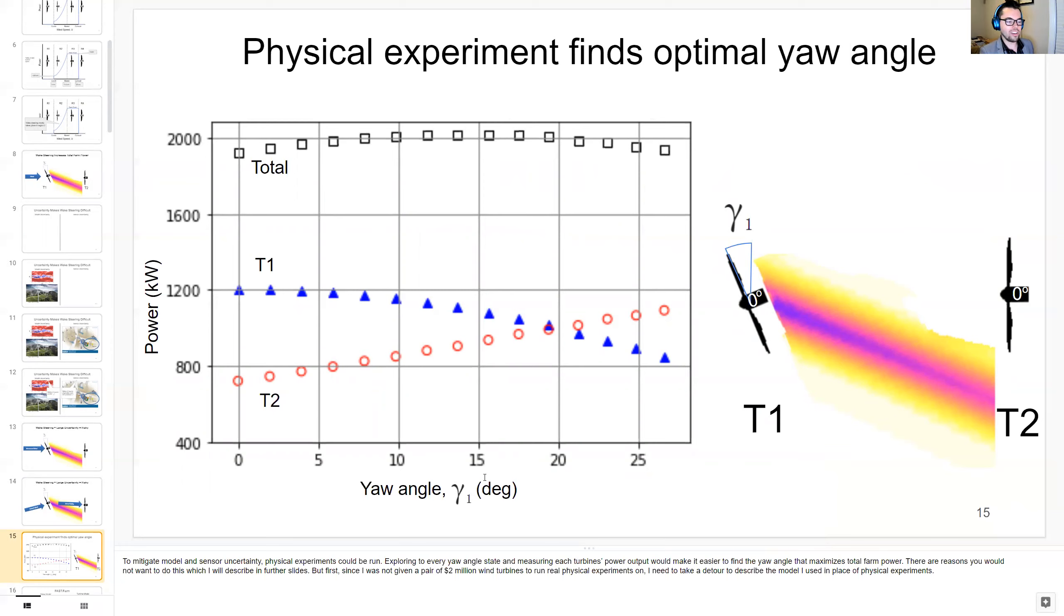Now you could use physical experiments to find the actual best yaw angle gamma 1. By exploring every yaw angle state and measuring each turbine's power output, this would make it easier to find the absolute best yaw angle. There are reasons why you wouldn't want to do this though, which I'll describe in further slides.